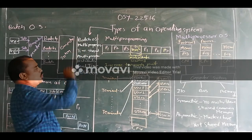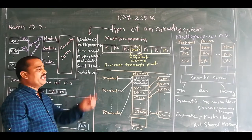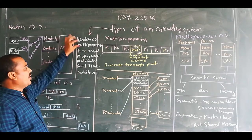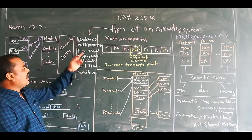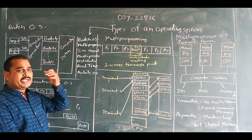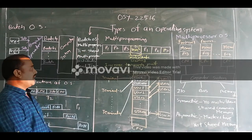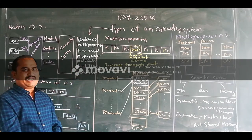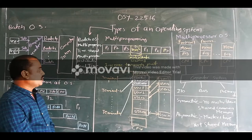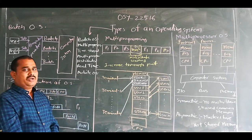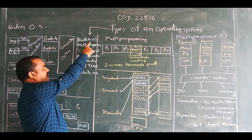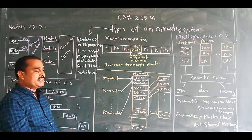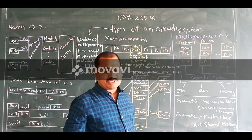Among these, the first two — the batch operating system and multi-programming operating system — are the non-interactive operating systems. After this, the timeshare and multiprocessor operating systems are the interactive operating systems. In today's session, we have covered only the batch OS, the multi-programming operating system, the timeshare operating system, and the multiprocessor operating system.